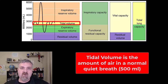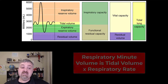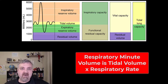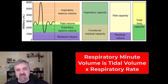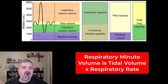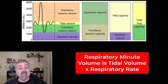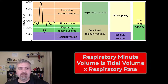Tidal volume in both men and women is usually right around 500 milliliters — that is probably the most important number on here. This leads us to the next, which is called the respiratory minute volume. That is going to be the amount of air you move per breath, your tidal volume, times your respiratory rate, how many times you breathe in a minute — similar to cardiac output being stroke volume times heart rate. So that is called the respiratory minute volume.